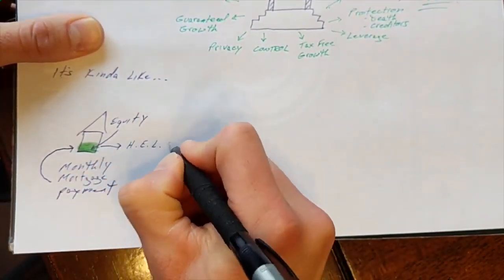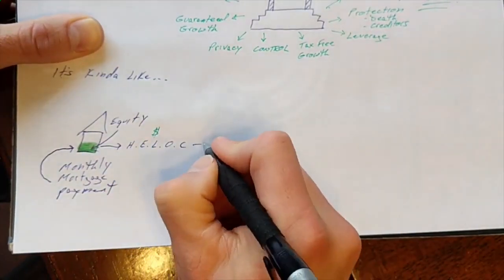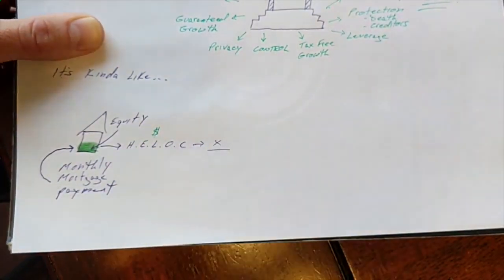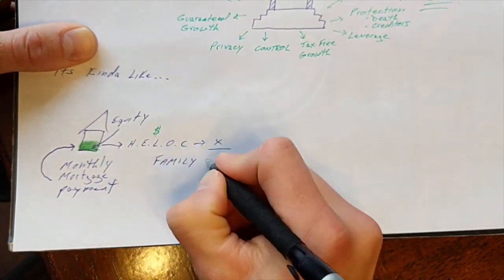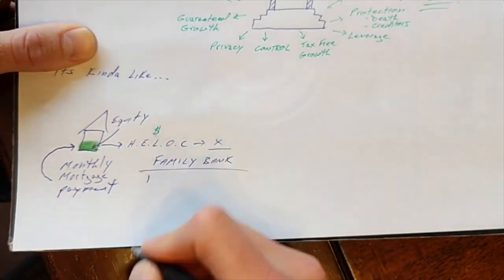Now, when you have enough equity built up, the bank may grant you a home equity line of credit where you can access that equity and use it for whatever you want. Now, the family bank operates a lot like this, except with a few distinct advantages.